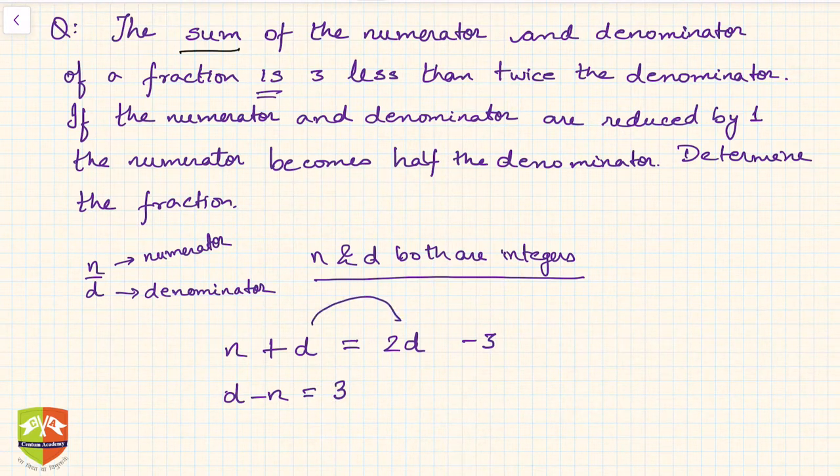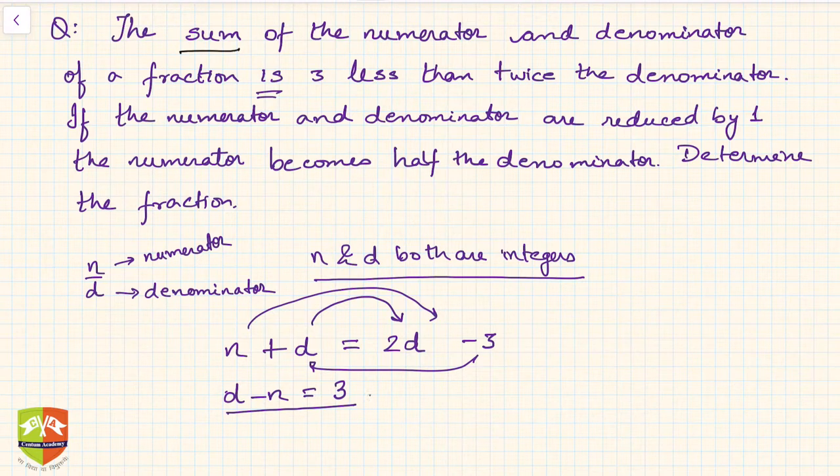So this d reduces 2d to d, and n goes on the right hand side, and this 3 comes here. So this will be d minus n equals 3, equation number 1.